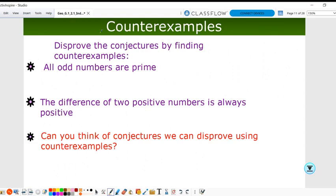Now we're going to disprove conjectures by finding a counterexample. All odd numbers are prime. Think about coming up with a counterexample to that conjecture. Odd numbers: one, three, five, seven, nine, eleven, thirteen. Is there one that isn't prime? Nine should have popped into your brain. Nine is an odd number but it is not prime. Prime meaning I can only create that number by multiplying one and itself. Here I can multiply one times nine, but also three times three. The difference of two positive numbers is always positive. Can you think of a counterexample to disprove that?